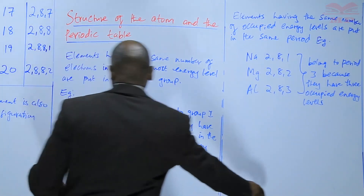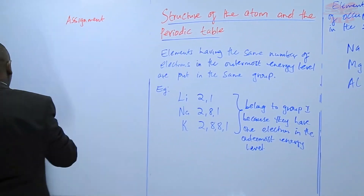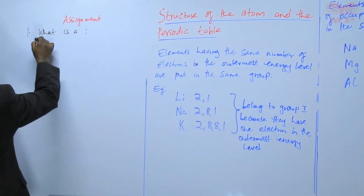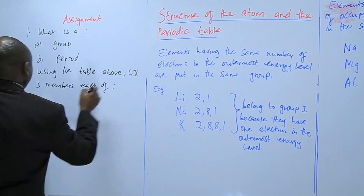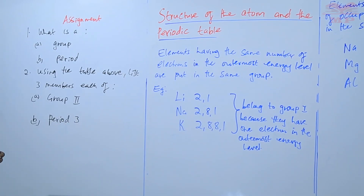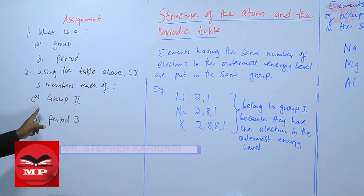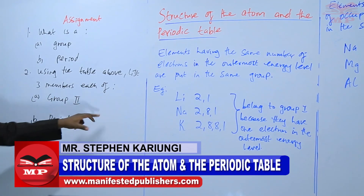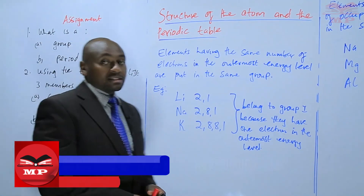So we'll have an assignment. The first question: what is a group? Define what is a group and what is a period. Number 2: using the table that we have just drawn, list 3 members each of group 2, and list 3 members of period 3. We'll stop there until next time. Goodbye.